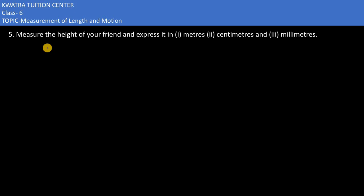In the fifth part, it says measure the height of your friend and express it in meters, centimeters, and millimeters. Let's say you've done this with the help of an inch tape.